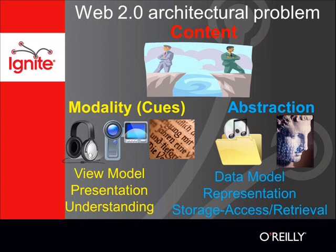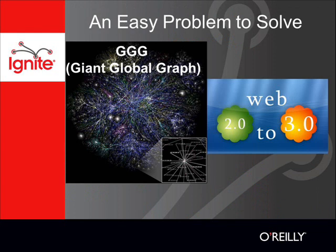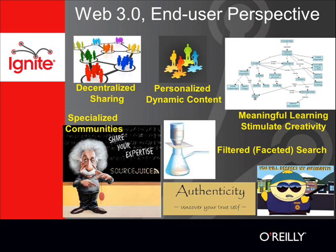Let me start with an easy problem. What is the difference between Web 2 and Web 3? The answer is 1, because it unifies two different perspectives: the end user perspective and the technical user perspective — also known as GGG, or Giant Global Graph.